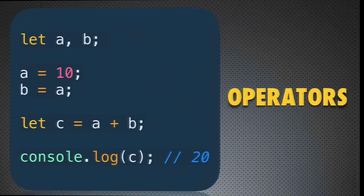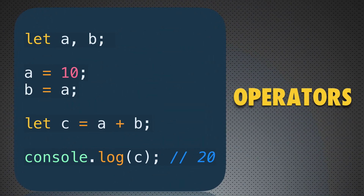Let's look at a sample piece of code that contains many different operators. For example, on the first line you see the comma operator. Using the comma operator you can separate different expressions. In this example, instead of declaring variables a and b on two different lines using 'let a' and 'let b' syntax, we use simply one line of code with the comma operator between variable names a and b.